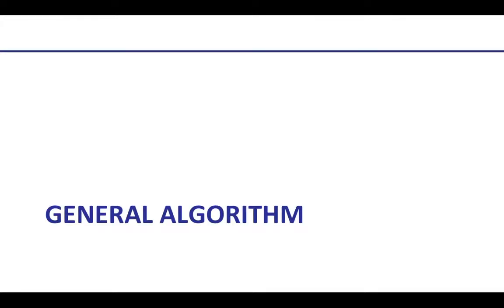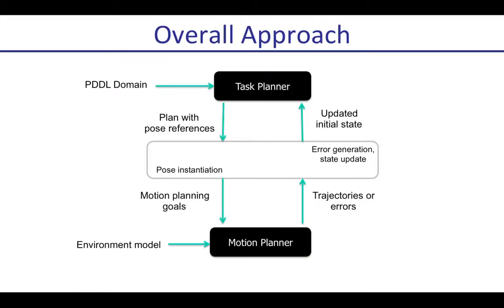So how do we formalize this? In the big picture, we take a task planner and a motion planner and treat them as black boxes. The interesting work is done in the interface layer: we get a task plan with pose references, create instantiations for those references, and use a motion planner to figure out whether each instantiation is feasible. If it isn't, we get the errors, translate them into logical facts, and give them back to the task planner. If the pose instantiation is feasible for the entire plan, then we're done.